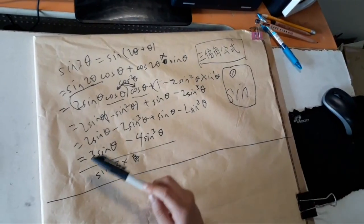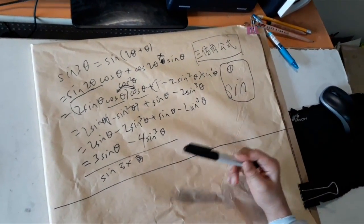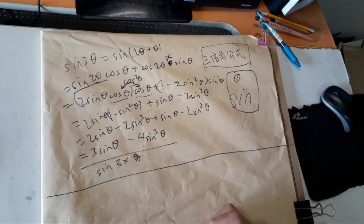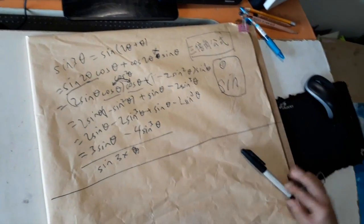So now we're left with 3 sine theta minus 4 sine cubed theta. And this is the sine 3 theta formula.